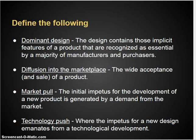Key terms to define: Dominant design is a design of a product that becomes so pervasive and recognized that manufacturers and consumers consider it necessary for a particular product line. Diffusion into the marketplace is basically how accepted a product becomes. Market pull is when the market or demographic wants and demands something. Technology push is where a new technology is developed, so producers manufacture something using it and offer it to the market — that may inspire a market pull, but doesn't necessarily have to. These are the two main reasons a new product gets developed.